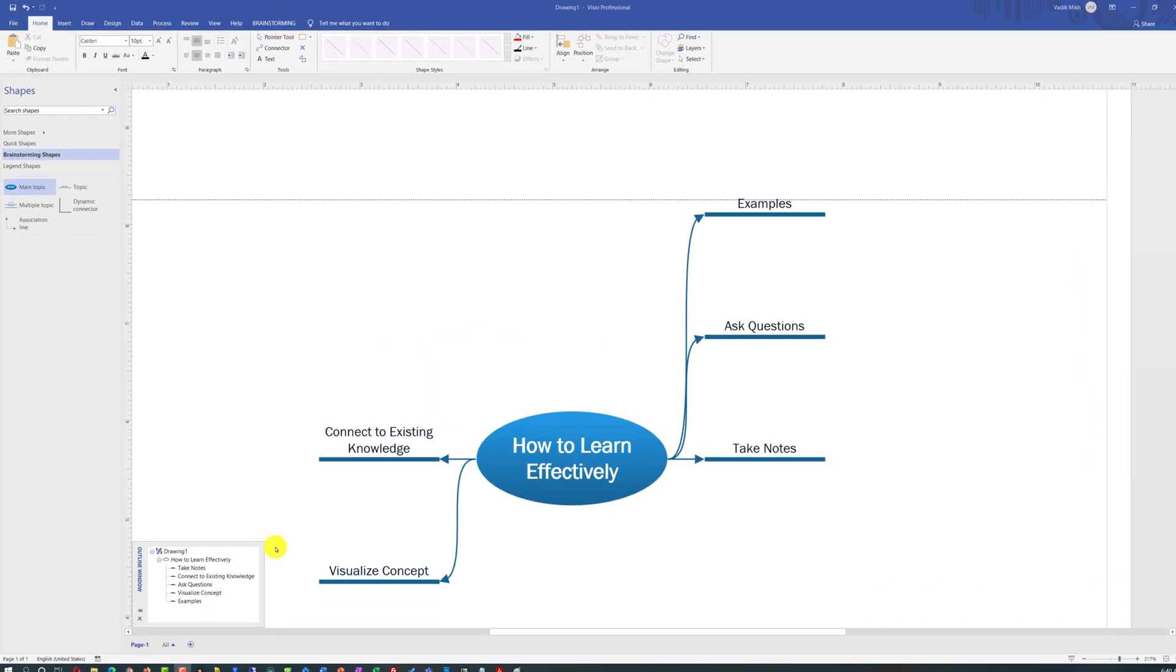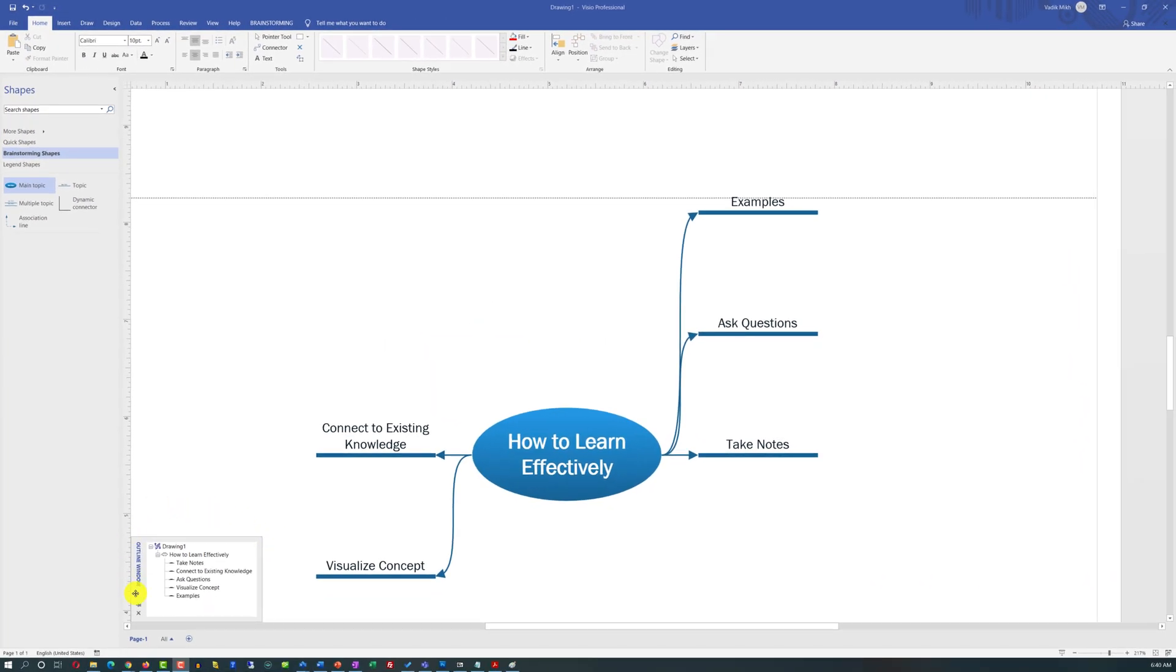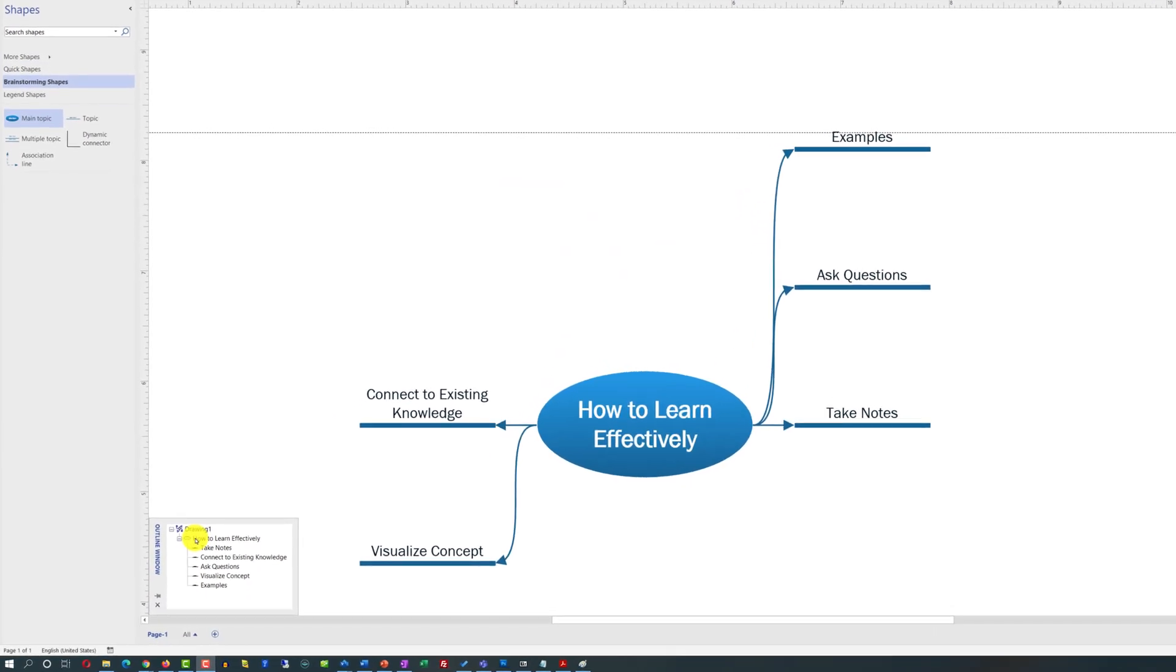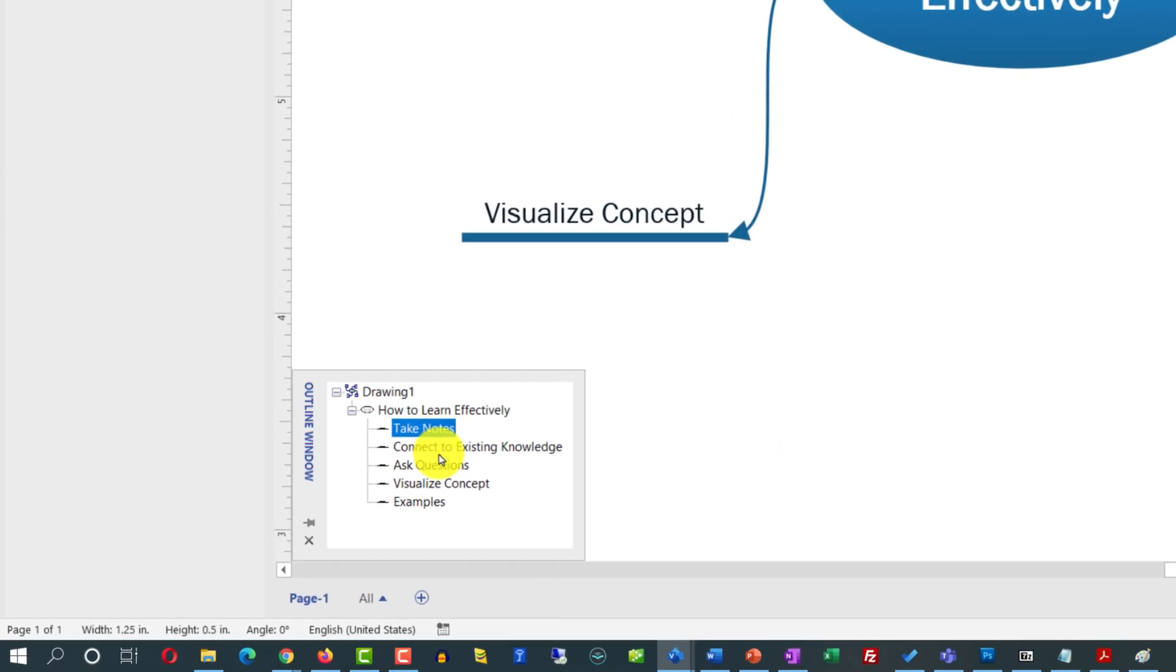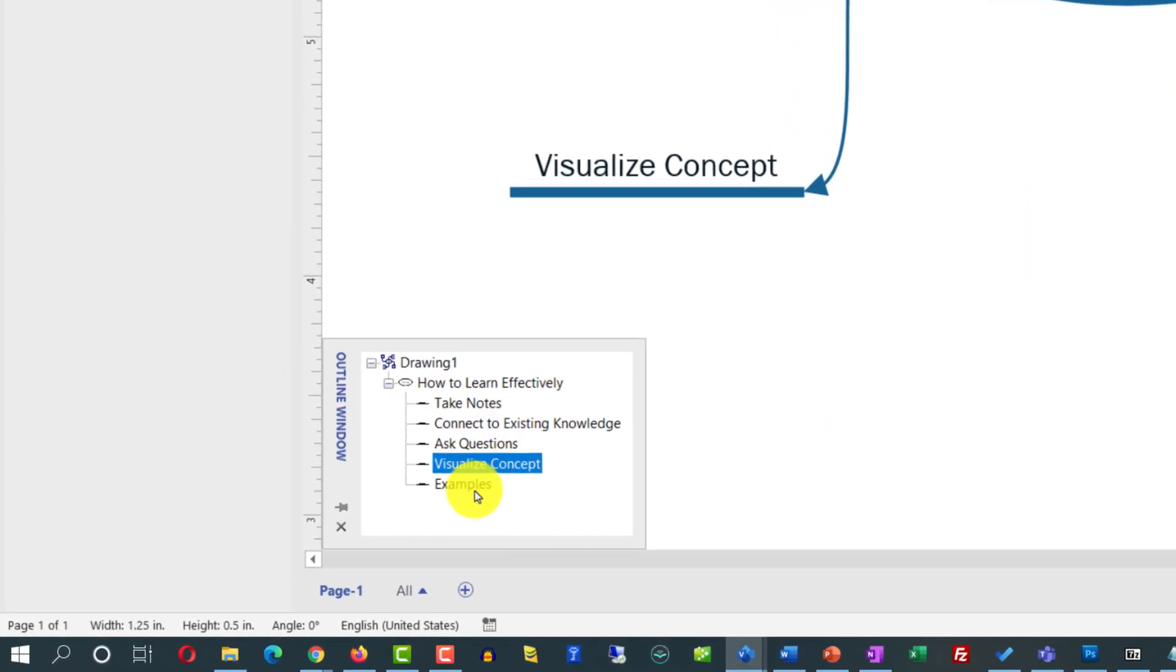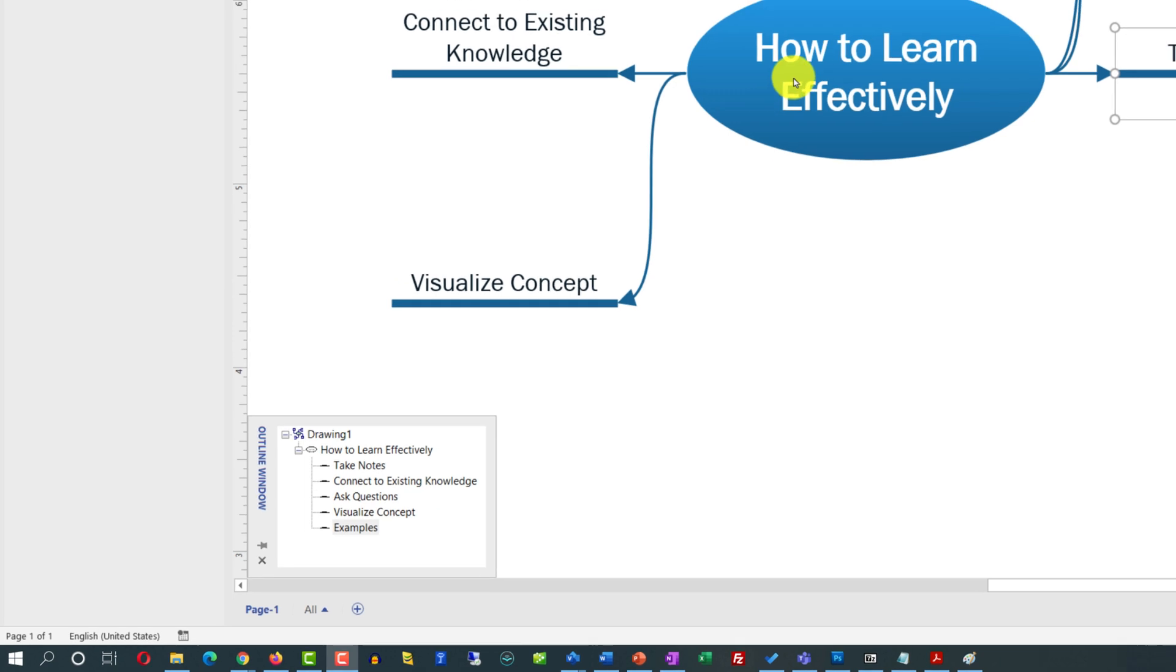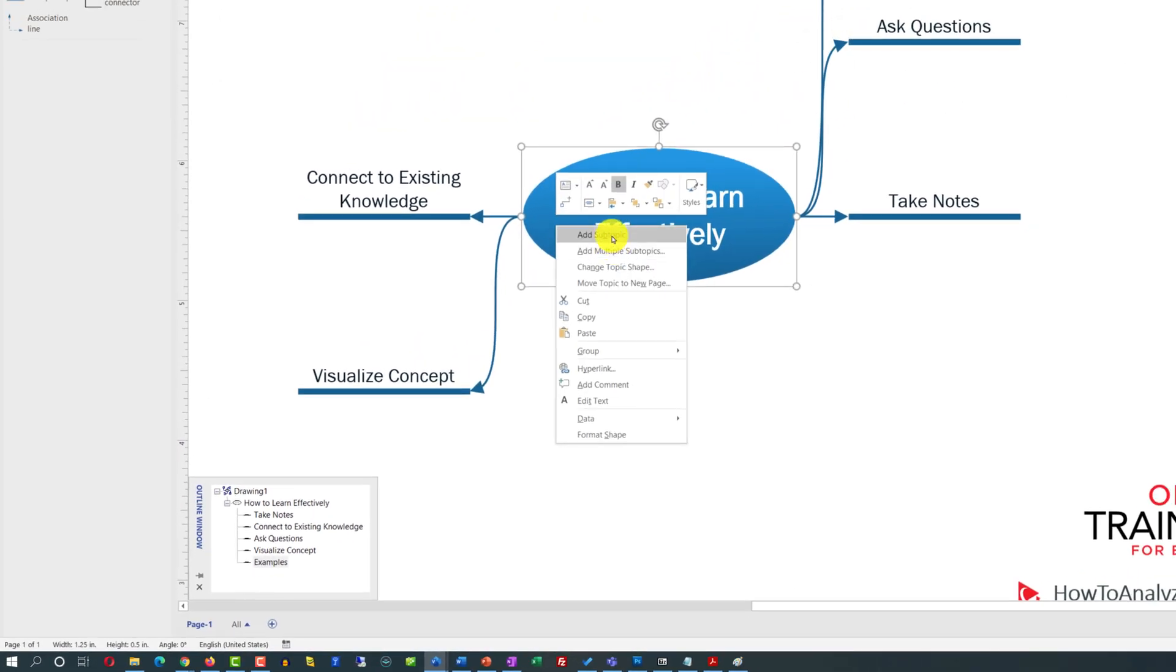Let's take a look at a couple things Microsoft Visio provides to make your diagram effective. Number one is the outline window. Here you see that we have main topic and we have five subtopics. You can edit things right here or you can get to the specific subtopic. By default, if you add subtopics through the right mouse click, they are added on the left side and on the right side from the main bubble.